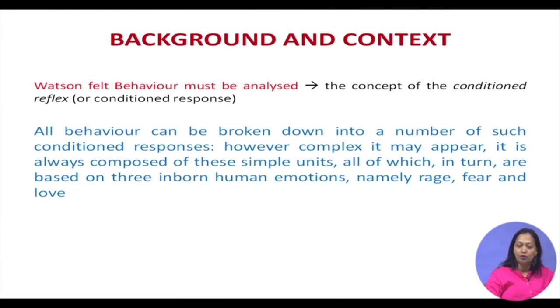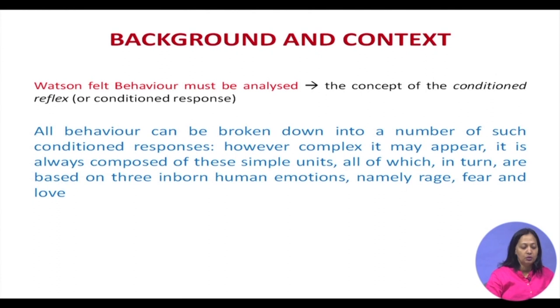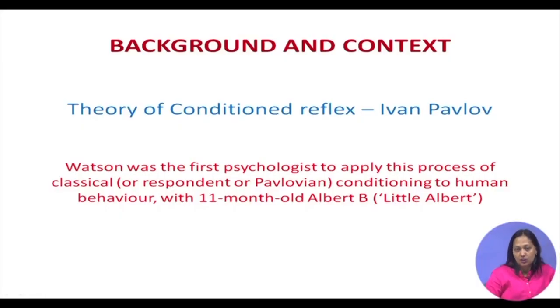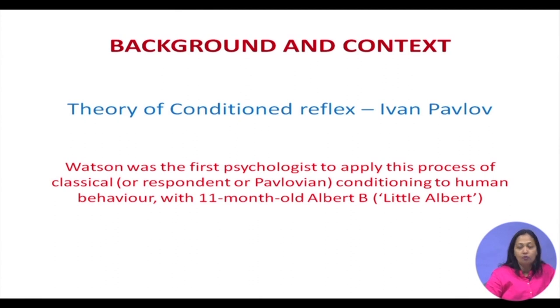Watson felt that all behavior can be broken down into a number of conditioned responses. However complex it may appear, it is always composed of simple units, all of which are based on three inborn human emotions: rage, fear, and love. The theory of conditioned reflex was given by Ivan Pavlov, a Russian physiologist, in 1904. Watson was greatly impressed and influenced by this theory, and was the first psychologist to apply classical conditioning — also known as respondent or Pavlovian conditioning — to human behavior.